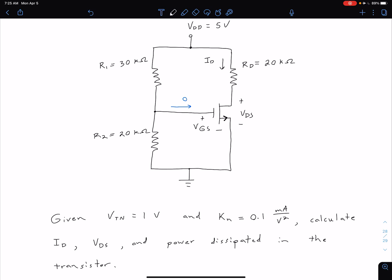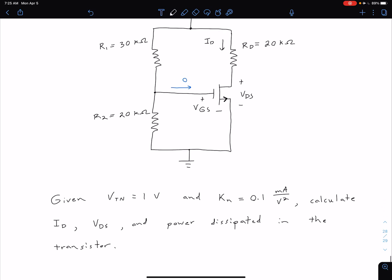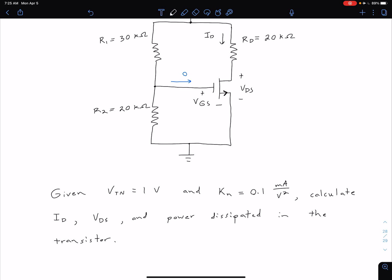So let's go ahead and get into our analysis. We're interested in our ID and our VDS. And in order to get either of those, we need to know the state of the transistor. So in order to do that, we want to see what our gate voltage is relative to our source. In other words, we're interested in our VGS, so this voltage right here.